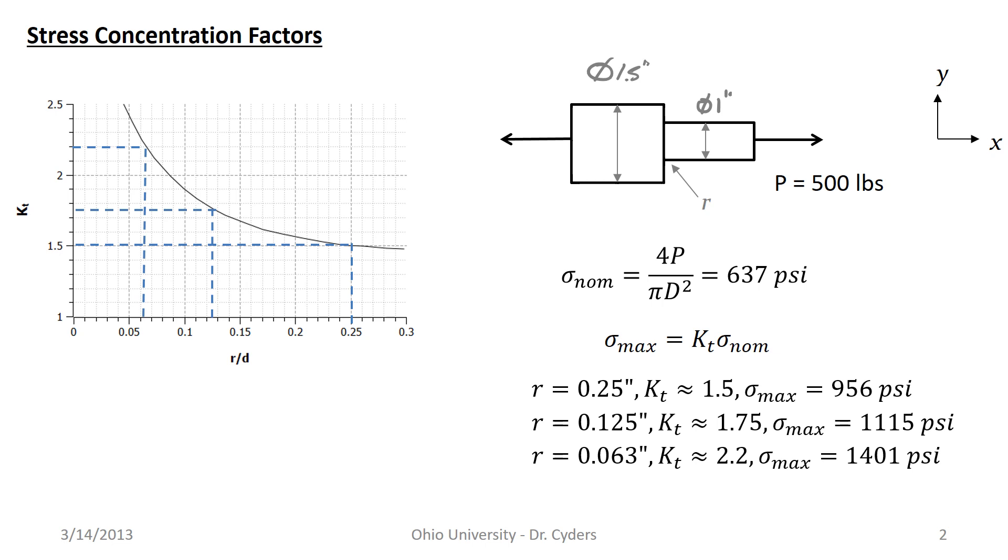Let's say that I ignored this stress concentration factor and had used a factor of safety of 2, 2.5. I'm almost in yielding at that corner. So we have to be very careful about acknowledging these changes in geometry and making sure that we try to model them accurately.